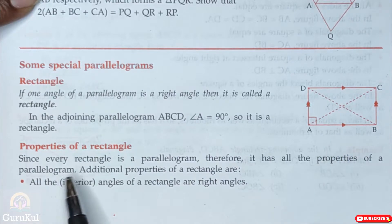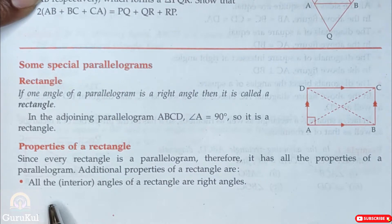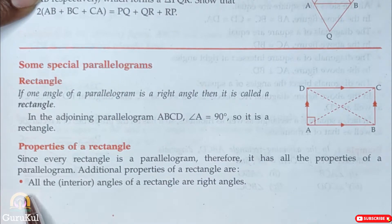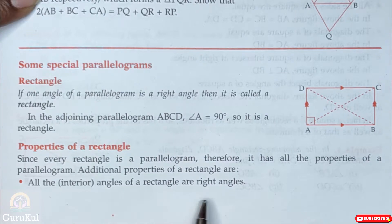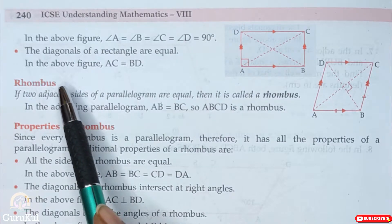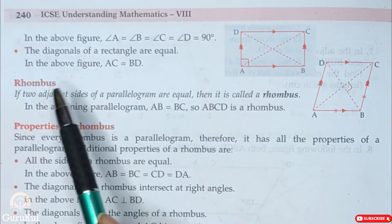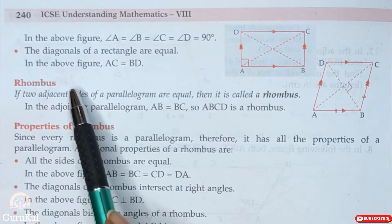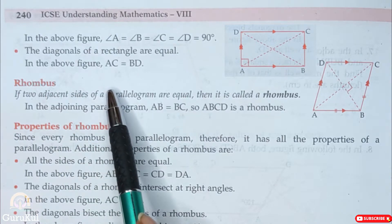So the properties of a rectangle. The first property is that all the interior angles of a rectangle are right angles. Right angle means 90 degree. It is given that the diagonals of a rectangle are equal. So as you can see in the figure, AC is equal to BD.